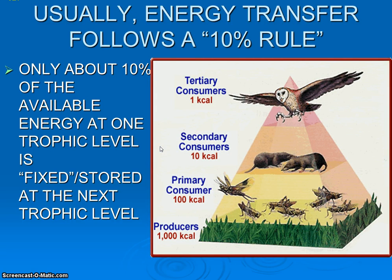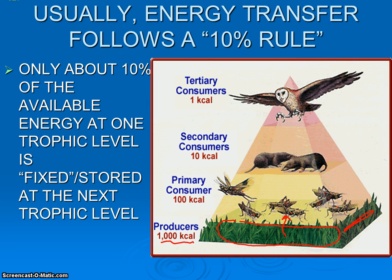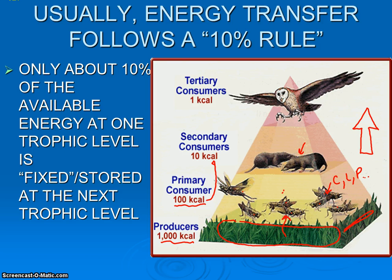A very important concept is what's called the 10% rule. Only about 10% of the available energy at one trophic level is fixed or stored at the next one. If we look at this pyramid, our total energy at the producer level is a thousand kilocalories. If all of the primary consumers were to eat and consume every last blade of grass, they would get the thousand calories of energy, but they would only store about 10% of that — a hundred. That energy would be stored in their bodies as carbs, lipids, proteins, et cetera. And the same thing with the moles and shrews eating these insects — they would only get 10% of that energy. As you go up trophic levels, energy decreases.